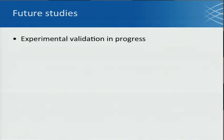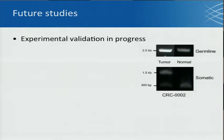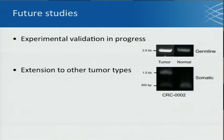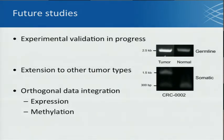For future studies, we're currently validating these events experimentally — this is just the first round of gels where you see the germline event happening in both tumor and normal, and the somatic event missing from the normal. We're going to extend this to other tumor types; we've already started on lung squamous and the results are consistent with the Divine Lab. We're also going to integrate other data types such as expression and methylation, which are known to play a role in this.